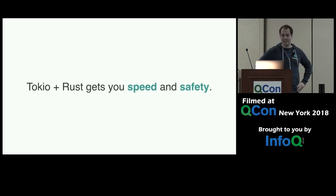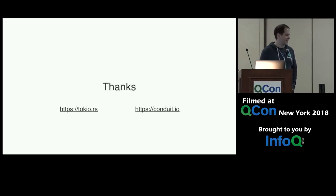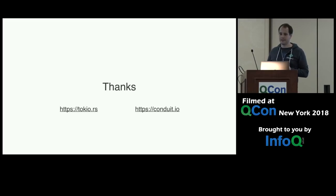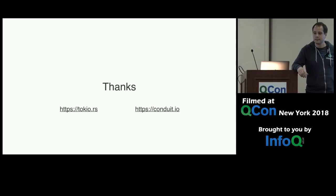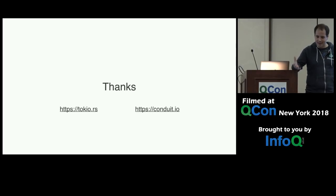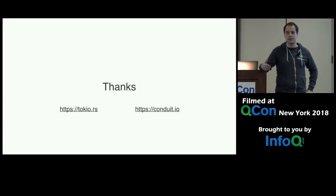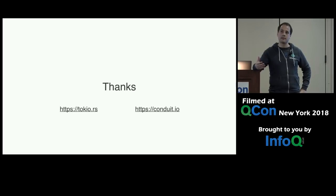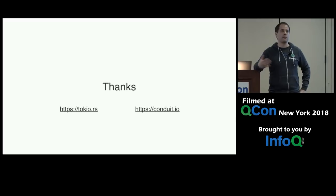All right, I think we have some time for questions. The first question: does Rust have language support for futures, or is that just a library construct? So right now futures is a library. The good thing about Rust as a systems language is you can implement basically anything directly in the language. There's ongoing work to add async/await capability to the language, which would require compiler support. A minimum amount of the Futures library will have to move into the language itself, but you'll still need the Futures library to get the full set of capabilities. So right now it's a library; with async/await, a little bit will move in.